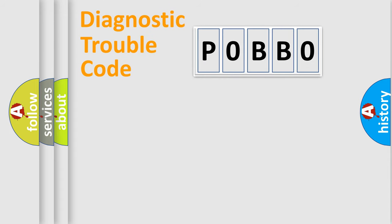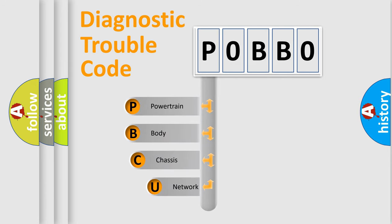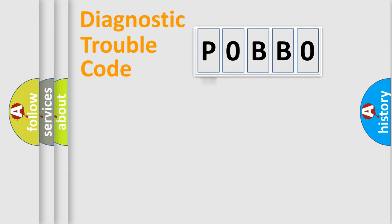Let's do this. First, let's look at the history of diagnostic fault code composition according to the OBD2 protocol, which is unified for all automakers since 2000. We divide the electric system of an automobile into four basic units: Powertrain, Body, Chassis, and Network.